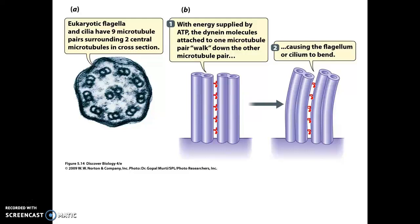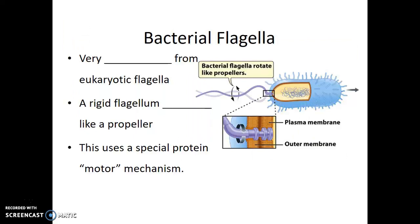It's as these dynein feet step or move that the cilia or flagella will flex and move left or right. Now this is very different from the bacterial flagella, which instead of being flexible is in fact rigid, and instead of moving back and forth in a whip-like manner, it rotates like a propeller. So bacterial flagella are very different from eukaryotic flagella — it's a rigid flagellum that rotates like a propeller, driven by a specific motor protein.